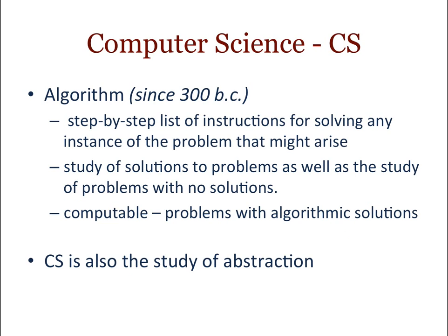Algorithms — basically a step-by-step list of instructions to solve a problem — represent the scientific approach to problem solving, and they've been around for a really long time. In fact, the first algorithms are dated back to 300 BC. Once you have a step-by-step way of following instructions to solve a problem, you can teach people to do that. With the advent of writing, it became important to write down how to solve certain problems, and those became the first algorithms.